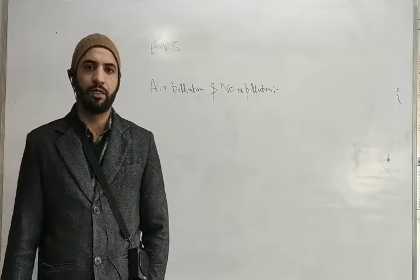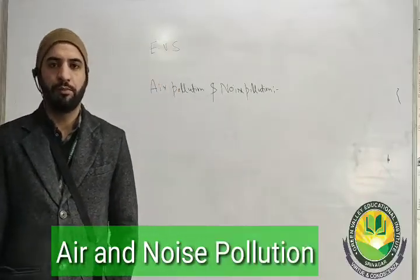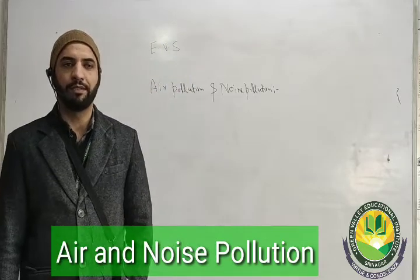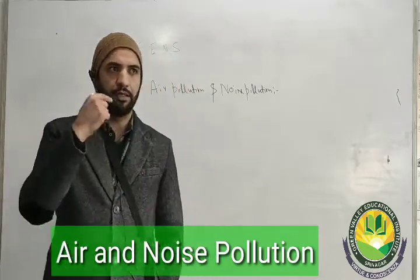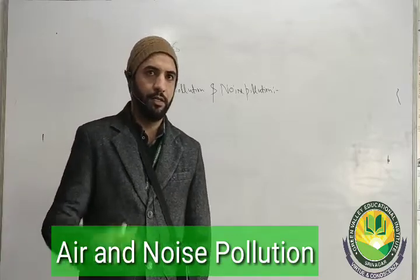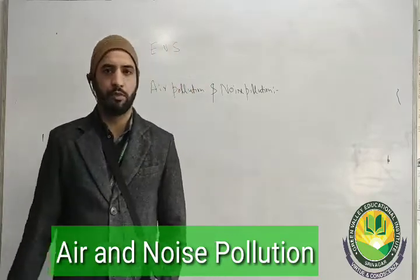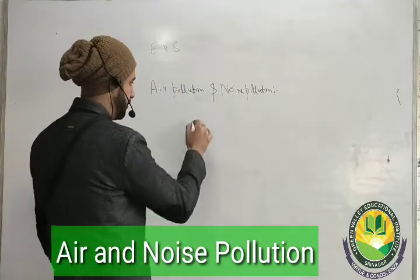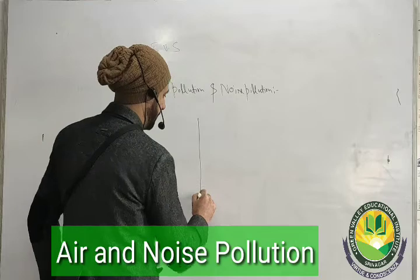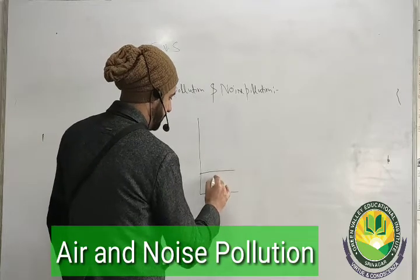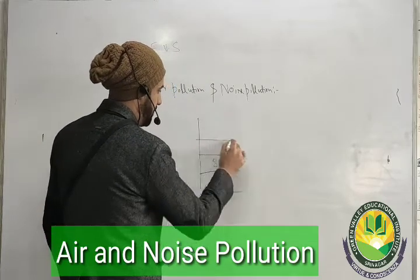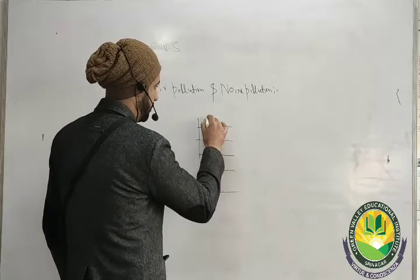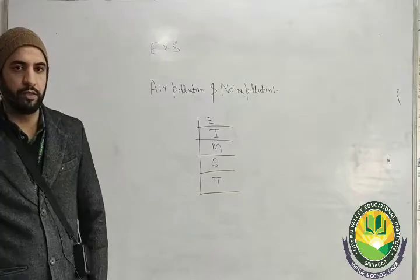First of all, let us understand what is atmosphere. Atmosphere means a blanket of air surrounding the earth. Atmosphere has different layers — troposphere, stratosphere, mesosphere, ionosphere and exosphere. These are the different layers of atmosphere.